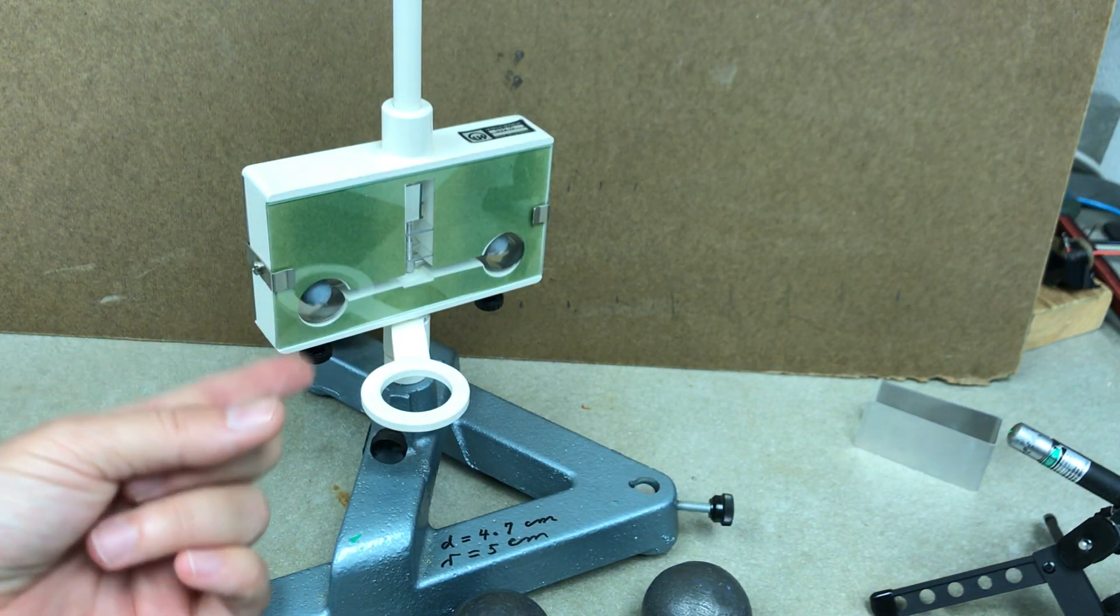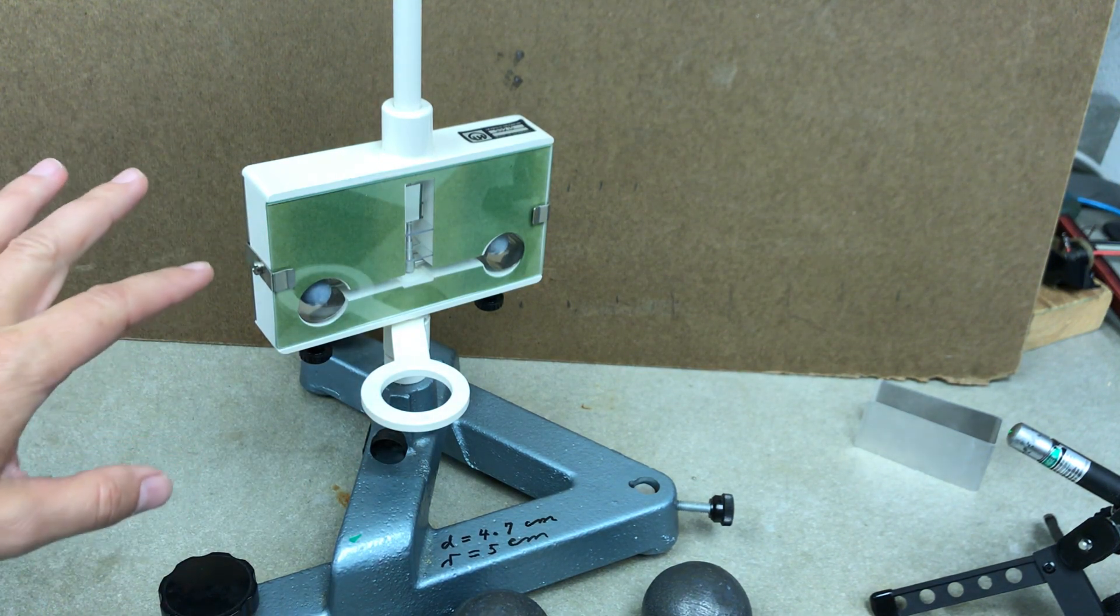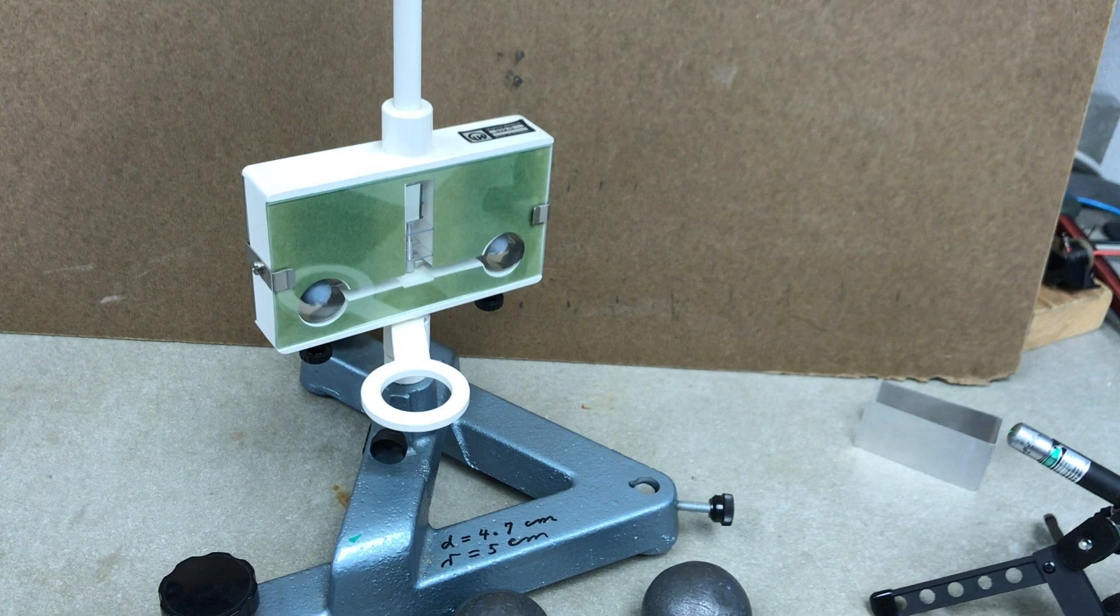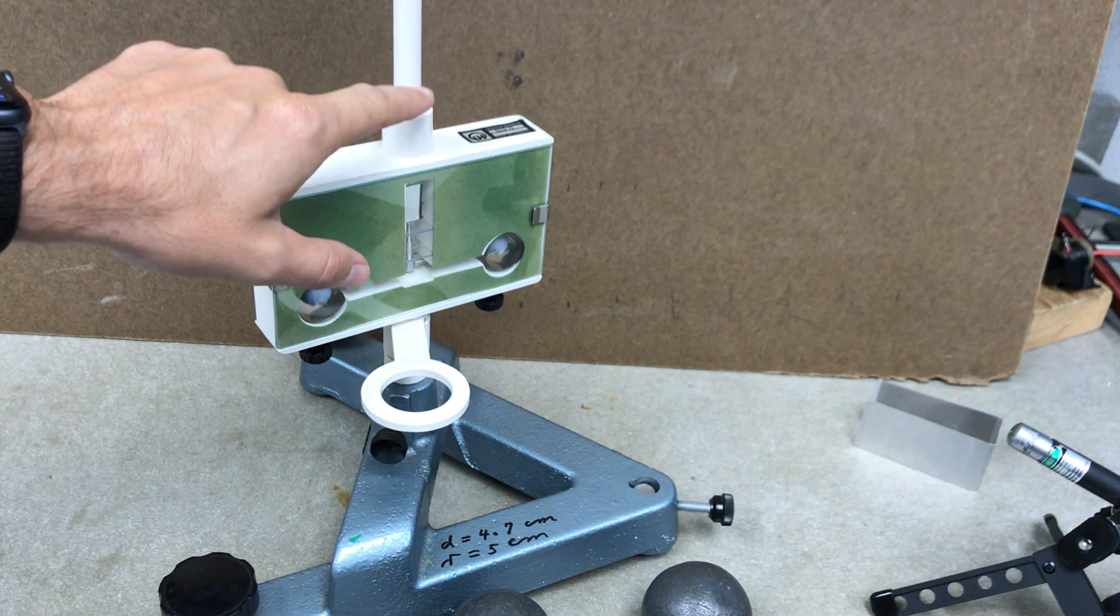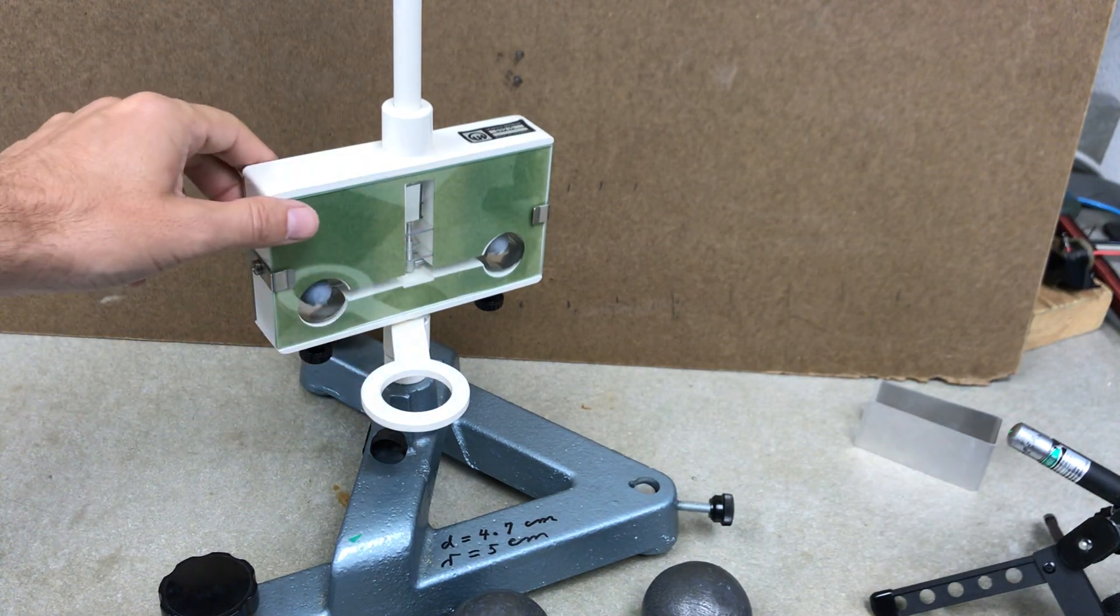This device is used to measure the mass of the Earth. Let's see what we have here. There's a very thin cable running down to a mirror. If you can see the mirror in there.